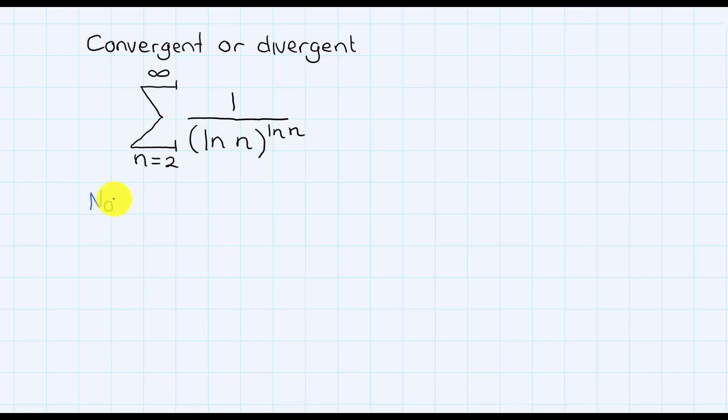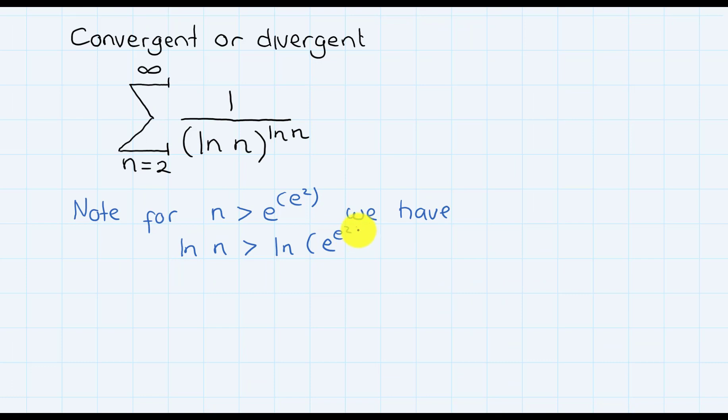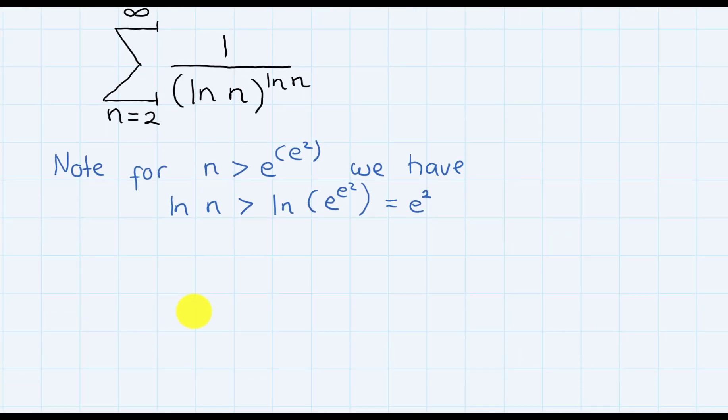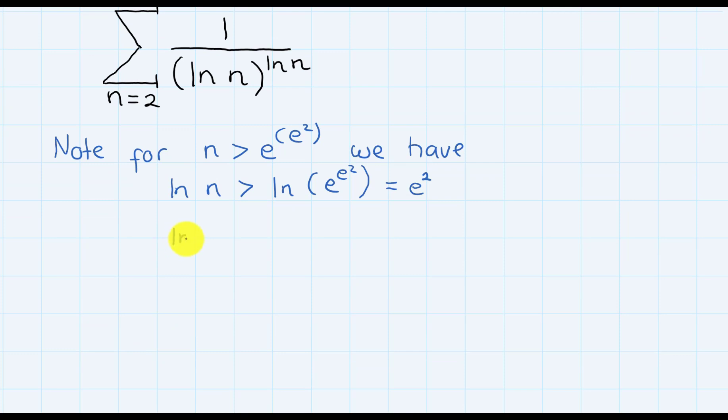I will say that note: for n greater than e to the power of e squared, we have, since the natural log is an increasing function, then ln n will be bigger than the natural log of this guy, which is equal to e squared.